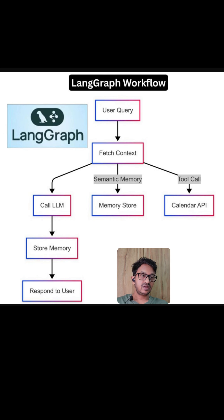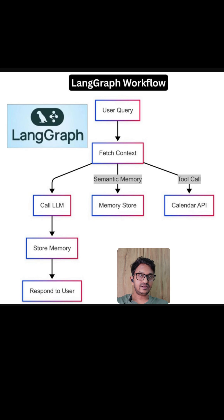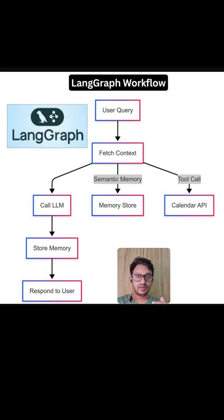LangGraph has some key components we need to understand. The first is Nodes — nodes represent tasks such as calling an LLM or fetching data from a database. Then there are Edges, which define the flow between tasks. Finally, there is State, which holds dynamic context — for example, messages and memory.